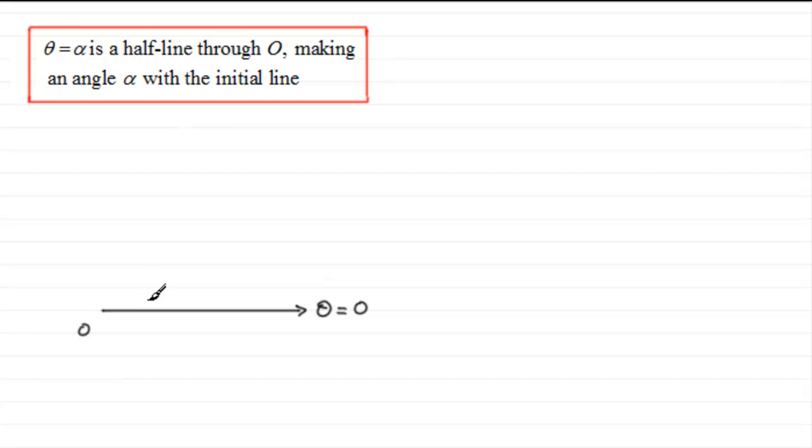And if we've got theta equaling alpha, then we've got, from O, we draw a line out like so, and this angle in here is the angle alpha. So what we've got here then is theta equaling alpha, a fixed half line starting from the pole here, O.